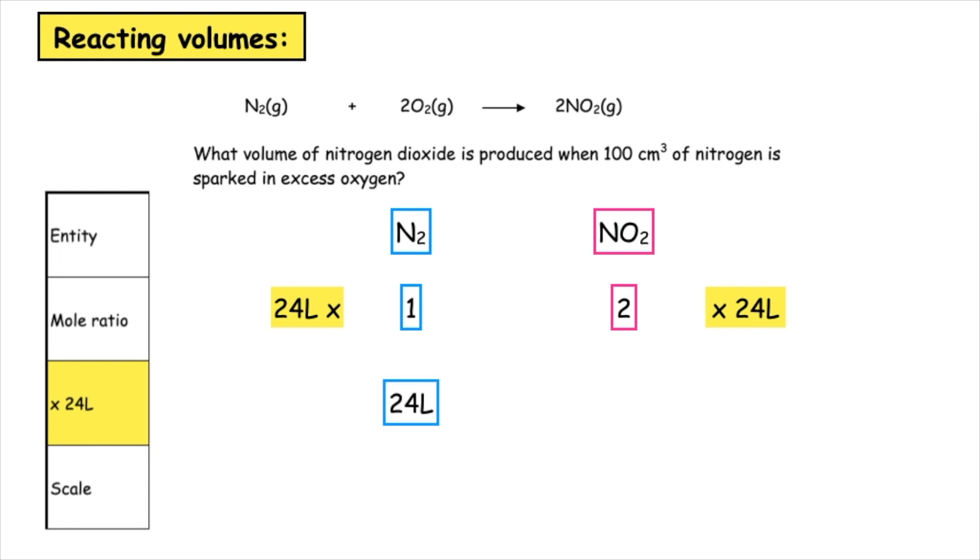We then want to scale for the quantity given in the question. We've been given 100 centimetres cubed. We have to convert that into litres which is 0.1. Because it is of the nitrogen gas we want to put it underneath the same entity and then cross multiply. 48 times 0.1 divided by 24 gives us 0.2 litres or 200 centimetres cubed.